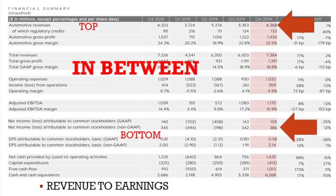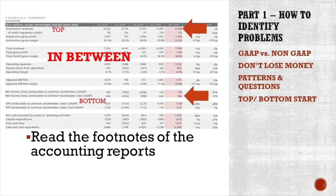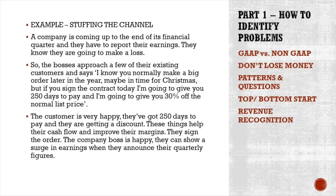Always start looking at the top line and see where it leads. One very important thing: read the footnotes of the accounting reports. They tell you what goes into the accounts, what detracts from revenues, and how everything works. A classic example of manipulation is channel stuffing — a company that recognizes revenue early.